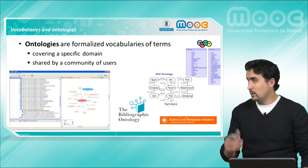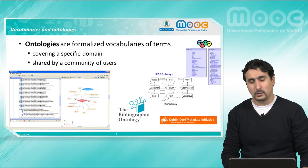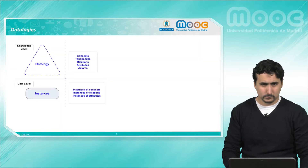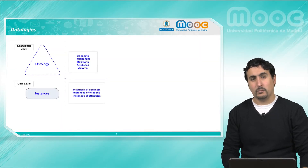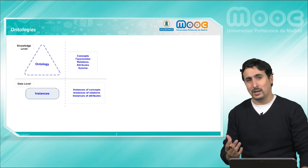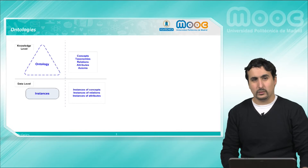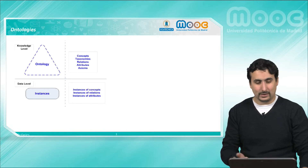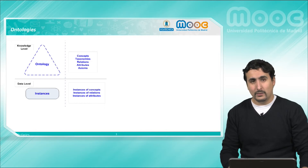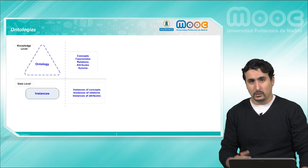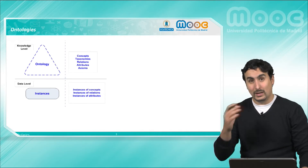Here in the slide we see a set of examples, a set of ontologies that we will introduce in the coming videos. As we introduced in the RDF module, we distinguish between the schema level and the data level in the context of semantic representation. We refer to this as well as the knowledge and data levels. On the knowledge level we will have the ontologies or vocabularies that model our understanding of the domain that we are working with, including the concepts, relations, and the taxonomical hierarchy relating them.